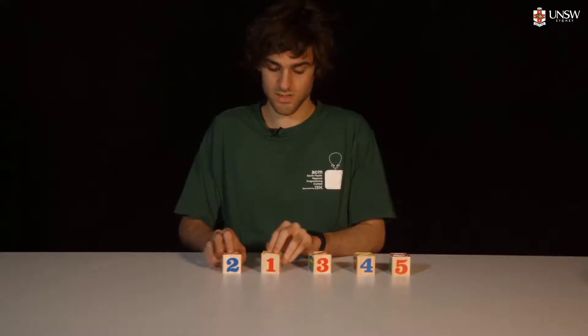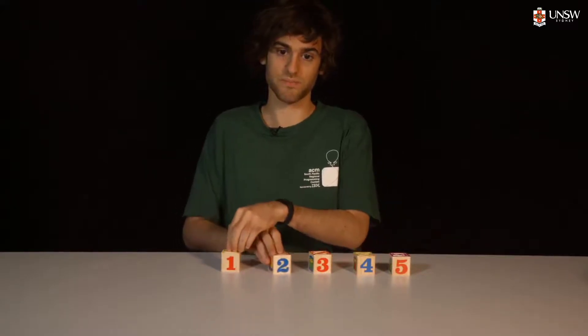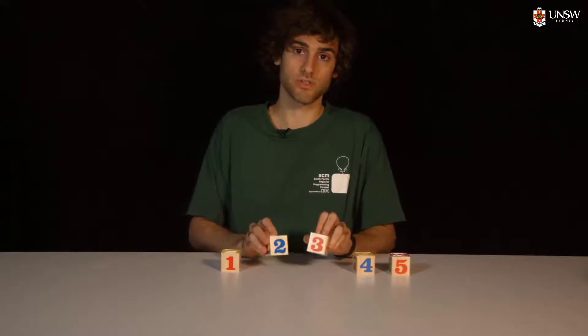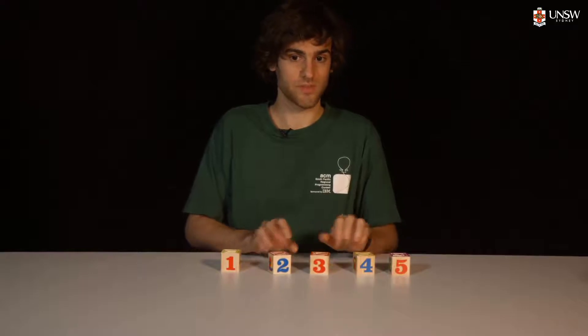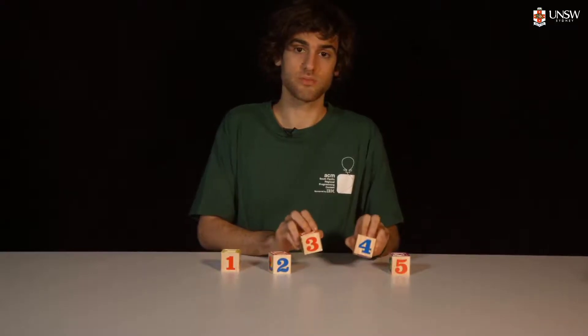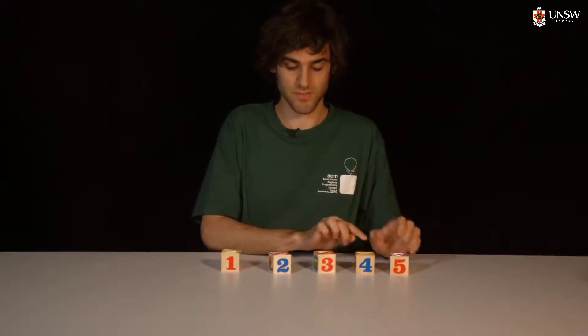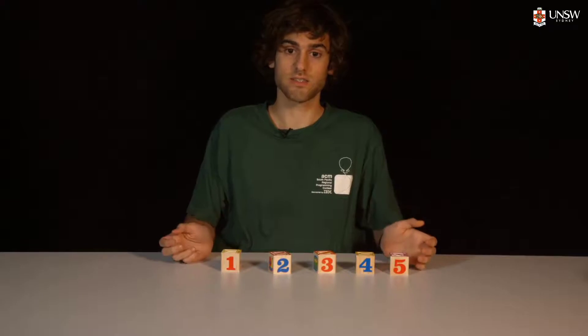Two is bigger than one, so we swap them. And then two is smaller than three, three is smaller than four, and four is smaller than five. And now our list is sorted.